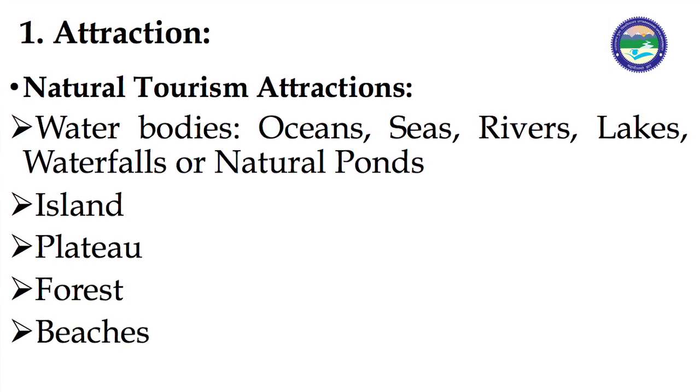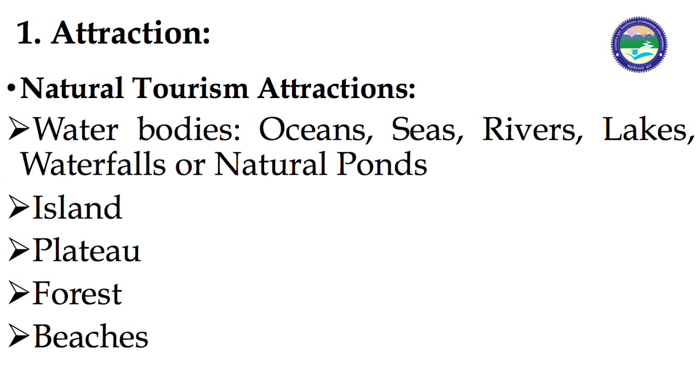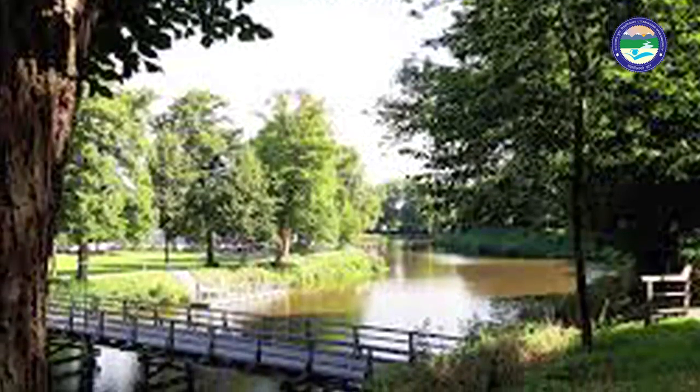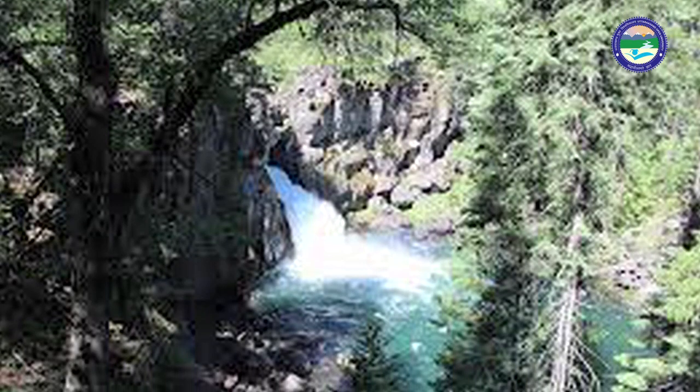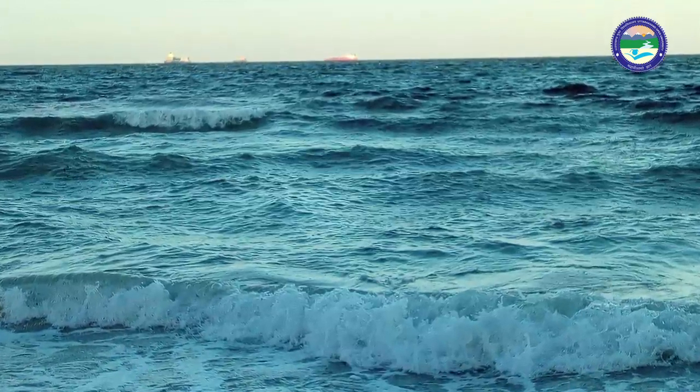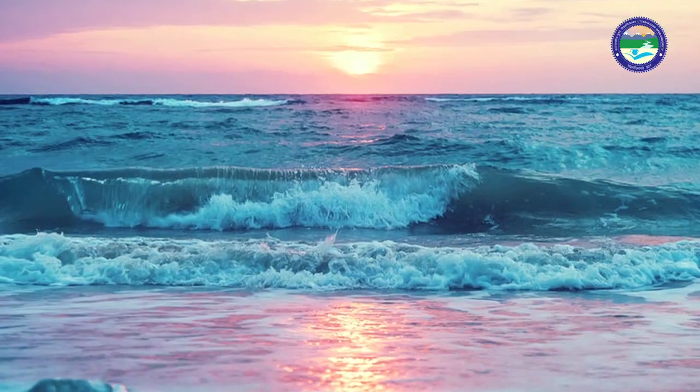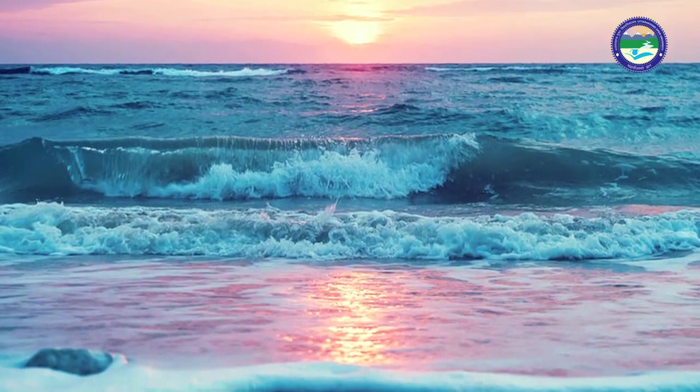Now we will discuss about natural tourism attractions. First is Water Bodies — areas where water naturally exists. We call ocean, sea, river, lakes, waterfall, and natural pond as water bodies. Examples of oceans include the Pacific Ocean, Atlantic Ocean, Indian Ocean, and Arctic Ocean. In terms of tourist interest and choice, people go to the ocean.